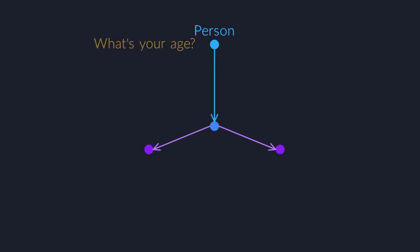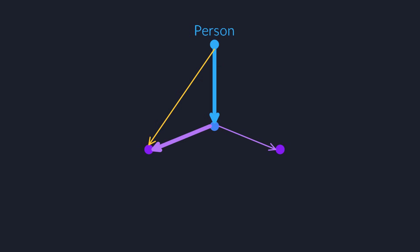You see, when we ask a person for his age, we get an integer. And if we first store that integer into a pair and then extract it from the pair, we obviously want to get the same integer. In other words, we want this little triangular diagram to commute. When we follow our constructor and then the first extraction function, this should be exactly the same function as the f that goes directly from the person to his age.